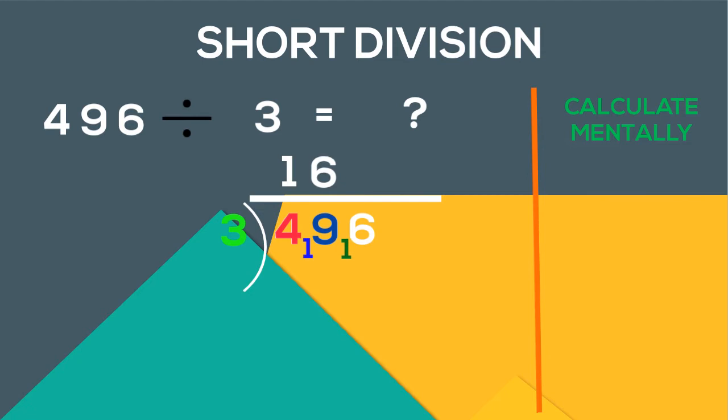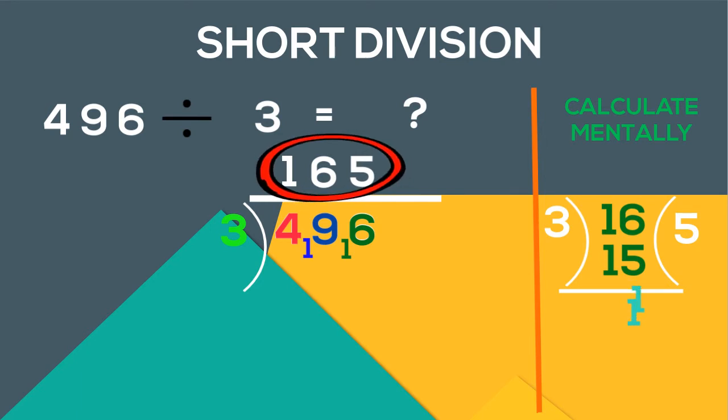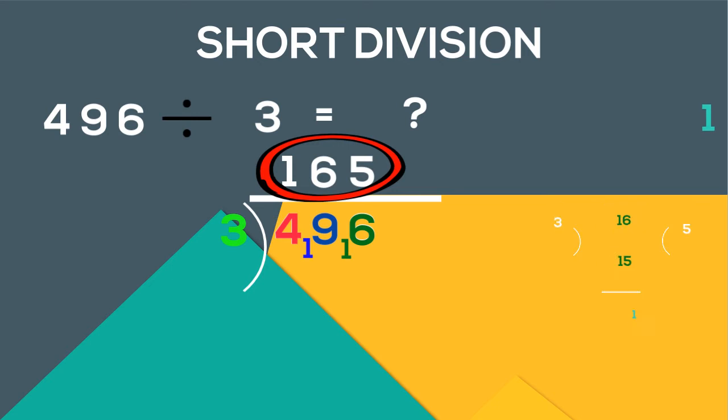Then we will consider 16. 3 goes 5 times in 16 and the remainder is 1. So 5 goes up and our final remainder is 1. Our answer is 165 with the remainder of 1.